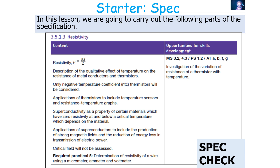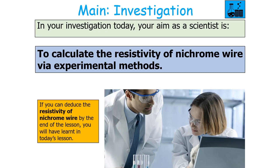In today's lesson we're going to be looking at the following part of the AQA A-level physics specification: 3.5.1.3 resistivity, in particular Required Practical 5 — the determination of the resistivity of a wire using a micrometer, ammeter and voltmeter. In this investigation the aim is to calculate the resistivity of something such as nichrome wire via experimental methods.